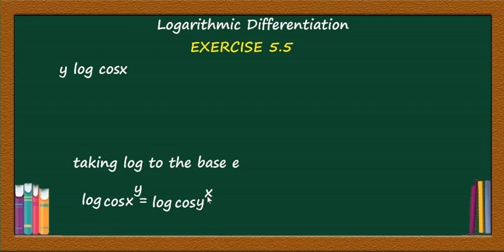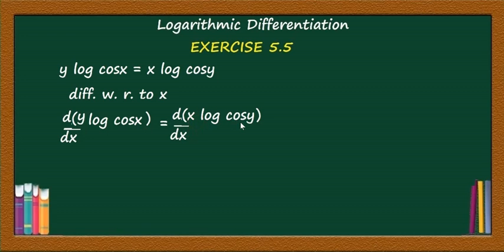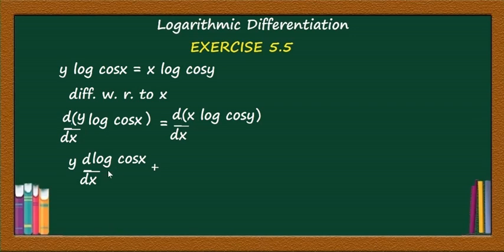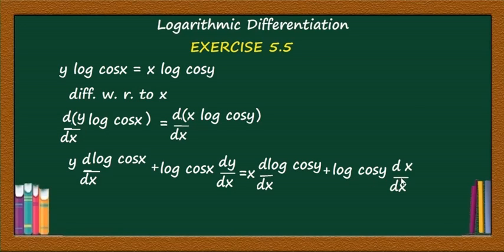Log of cos(y)^x equals x·log(cos y). Now, differentiating both sides with respect to x using the product rule: d/dx of y·log(cos x) equals d/dx of x·log(cos y). Applying the product rule: y·d/dx(log cos x) + log(cos x)·dy/dx = x·d/dx(log cos y) + log(cos y)·d/dx(x).